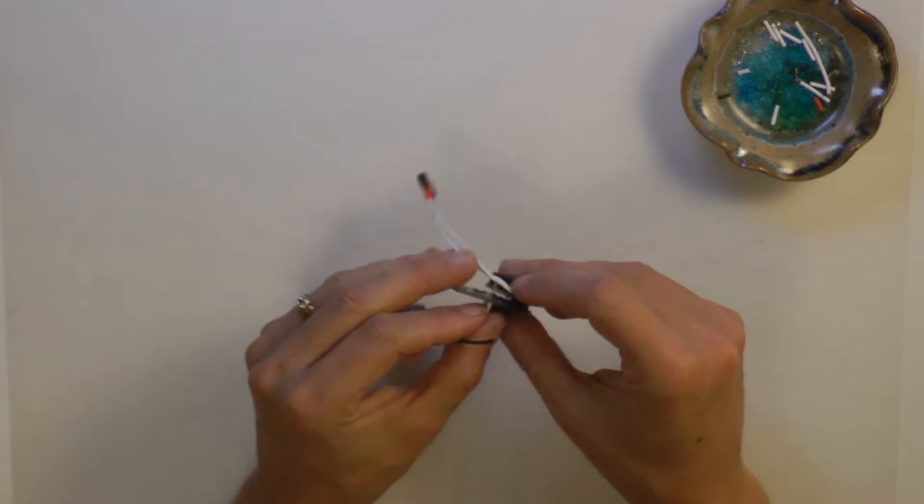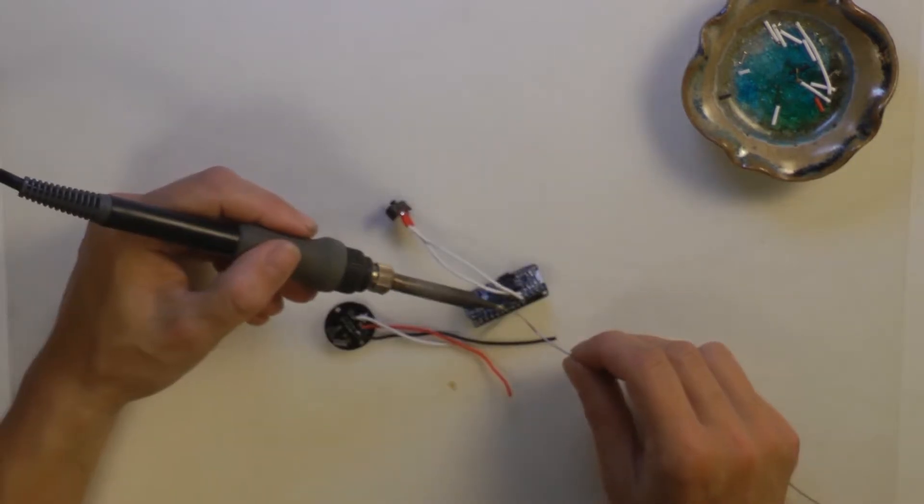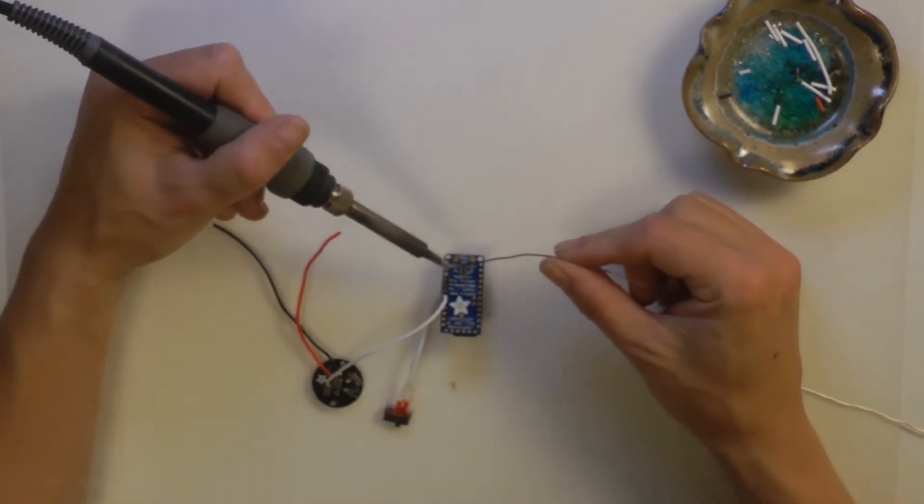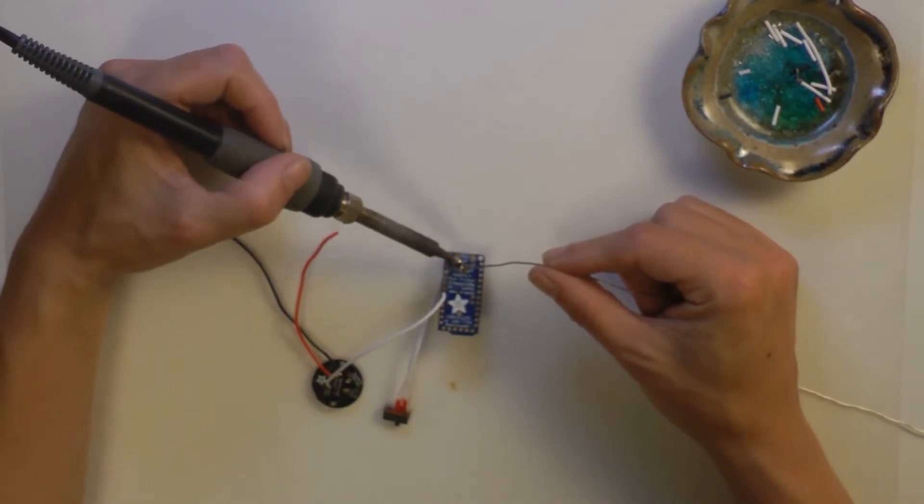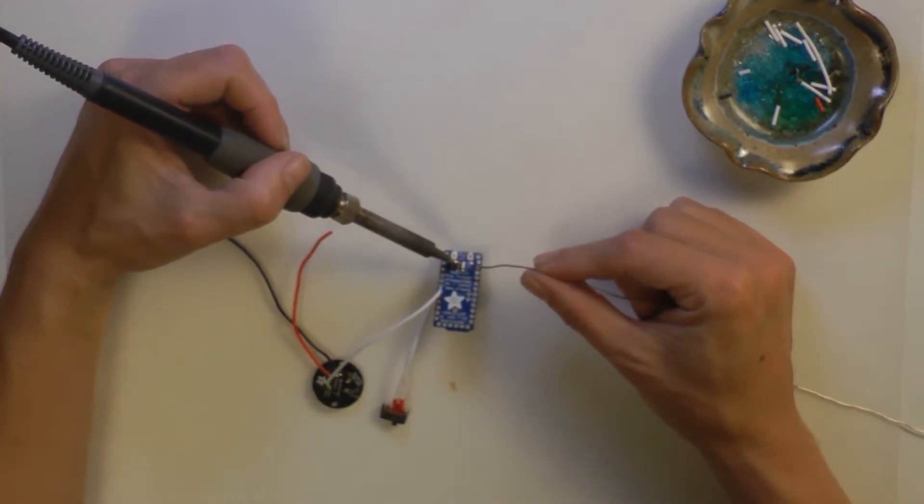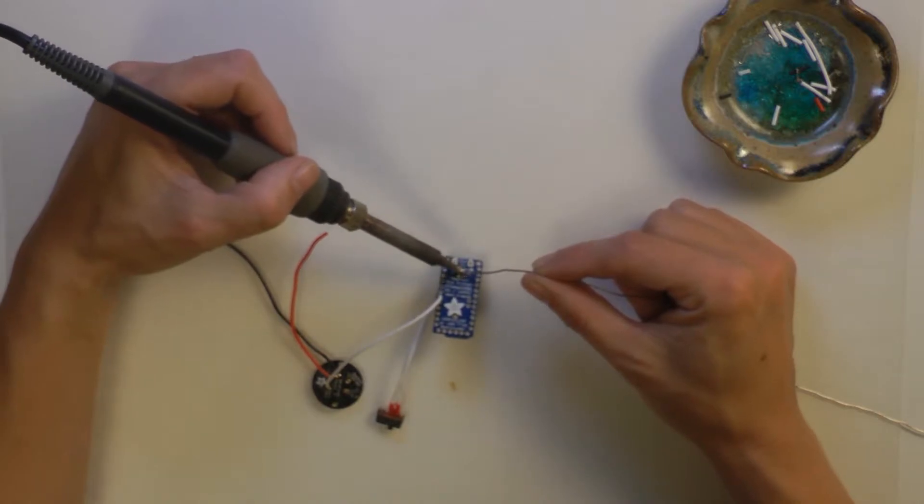Solder the white wire to pin 5. Tin the plus and minus pads on the back of the Pro Trinket and solder the red and black wires from the NeoPixel jewel to these two pads.